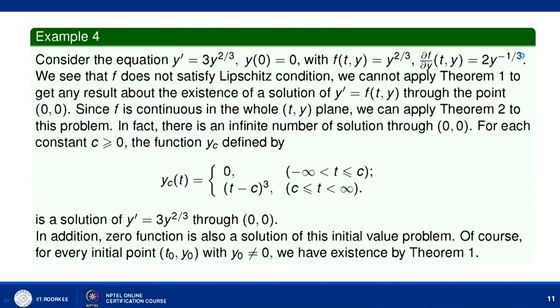Consider the equation y' = 3y^(2/3) with y(0) = 0. Here f(t,y) = y^(2/3), and we can check that it does not satisfy the Lipschitz condition in several ways. Looking at the partial derivative ∂f/∂y = (2/3)y^(-1/3), we can verify indirectly that f does not satisfy the Lipschitz condition. Hence we cannot apply existence and uniqueness Theorem 1 to get any result about existence and uniqueness of the solution.